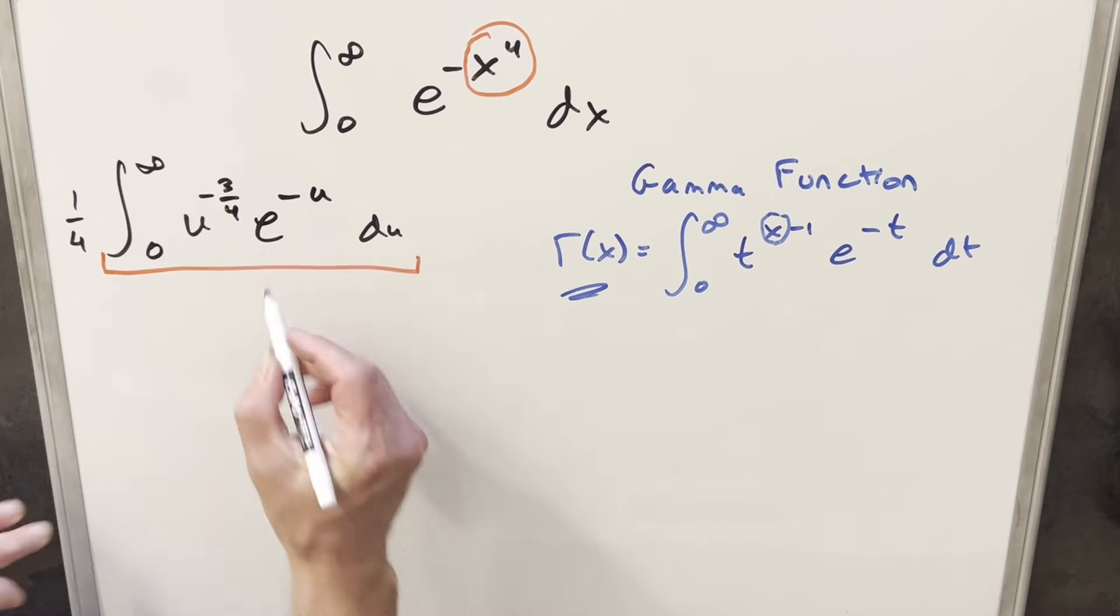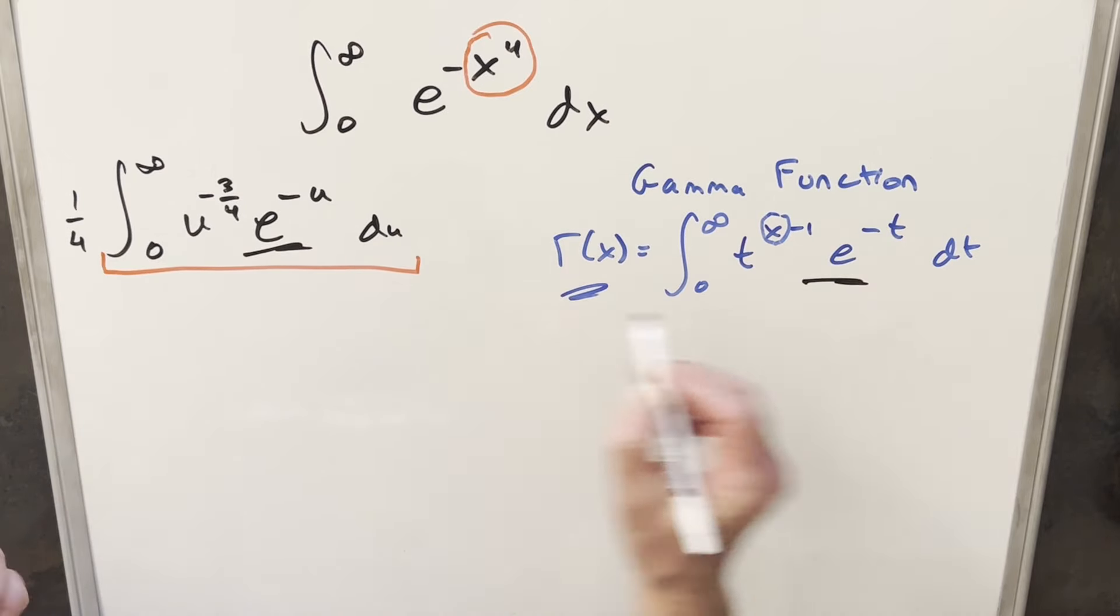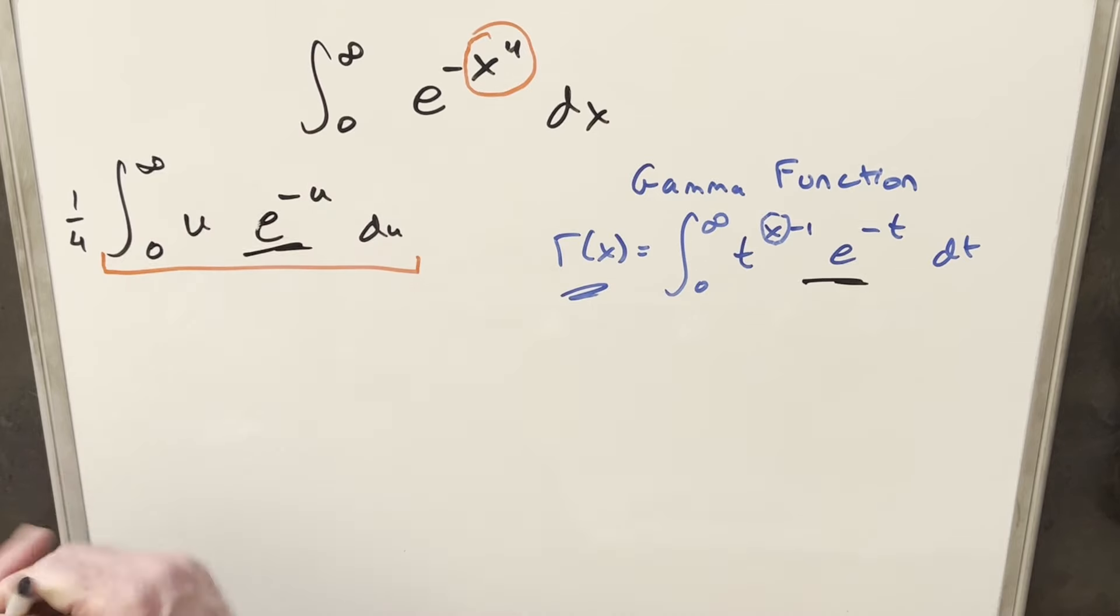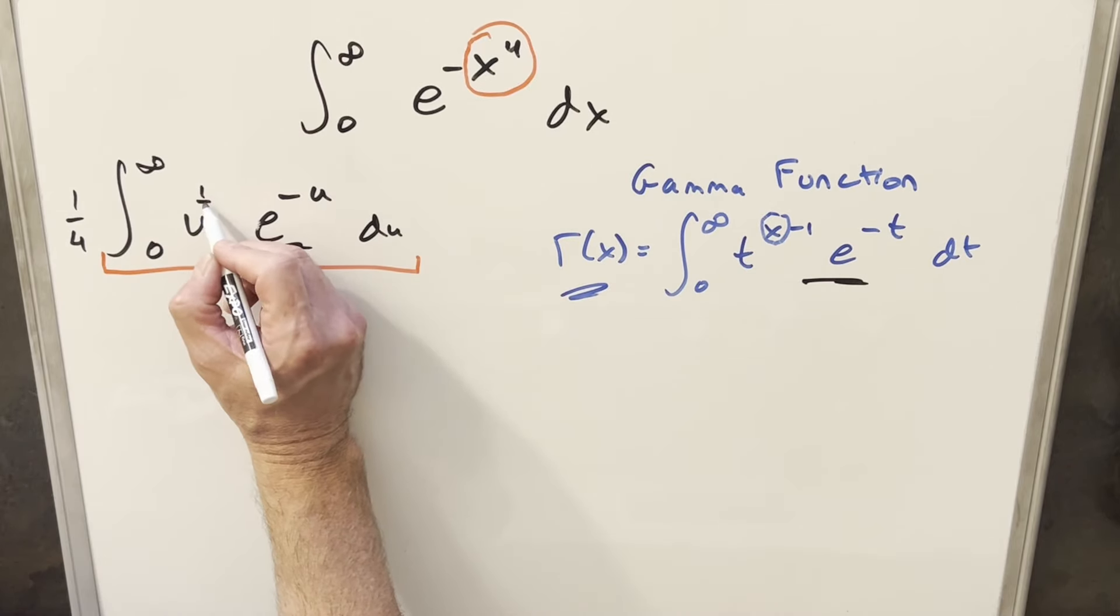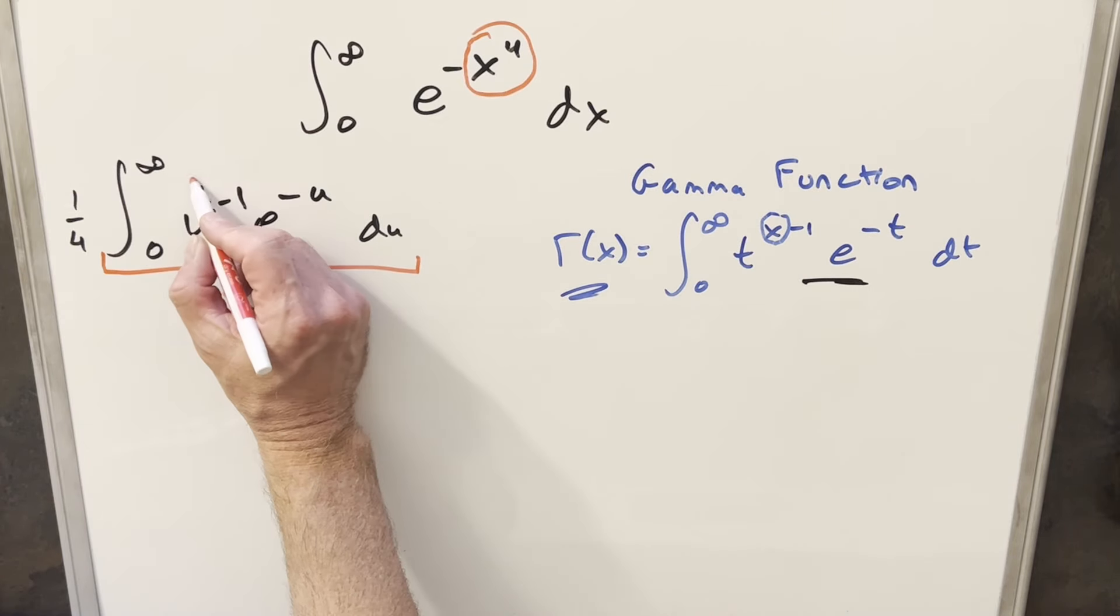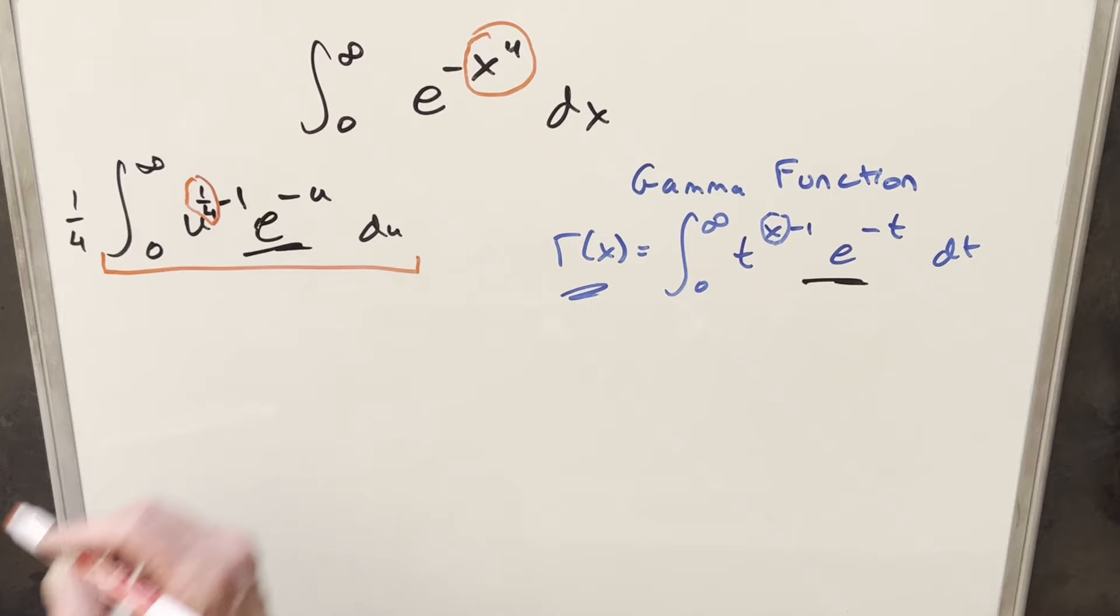Now coming back to our integral, this right here is exactly what we have here, just a different variable. So what I want to do is adjust this exponent on the u to get it in this form. So what I can do for minus 3/4ths, I can just rearrange this and write this as 1/4th minus 1, since that's still minus 3/4ths. And then doing it that way, the input into our gamma function is just going to be this 1/4th right here.